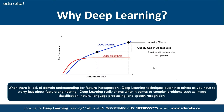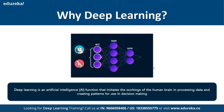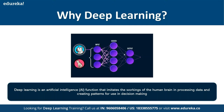Whenever someone talks about deep learning, you'll see a figure that looks like this. A deep learning network has an input, an output, and in the middle there are hidden layers. These three parts — input, hidden, and output — are the components of any deep learning neural network. Through the input layer we receive data, computation happens in the hidden layers, and the output layer displays the result.